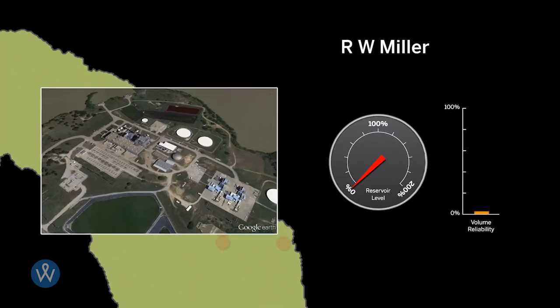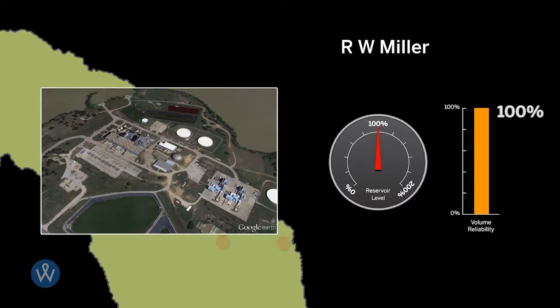At the RW Miller Generating Station, no water storage is currently permitted. During the drought of record, the RW Miller facility has reliability of 43 percent. Constructing a new reservoir with storage of one month's water withdrawal causes reliability to increase to 100 percent.